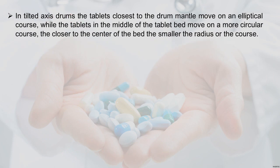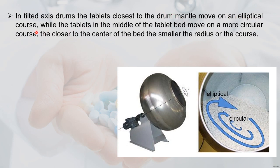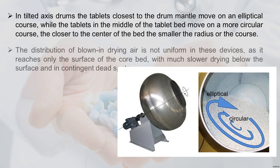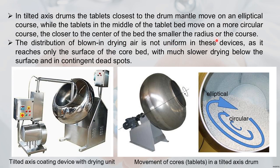In tilted-axis drums, tablets closest to the drum mantle move in an elliptical course while tablets in the middle of the tablet bed move on a more circular course. This is a drawback of tilted-axis coating pans — tablet movement is uneven. Closer to the center, the smaller the radius of the course. Distribution of drying air is not uniform, reaching only the core bed surface with slower drying below and potential dead spots.